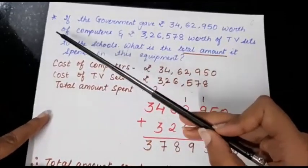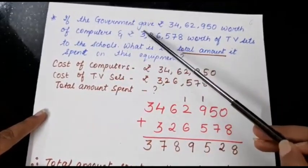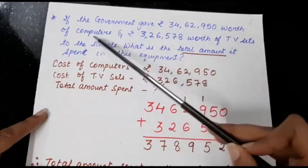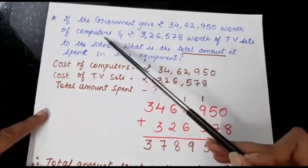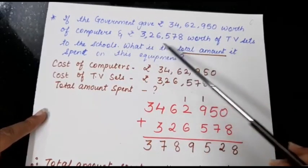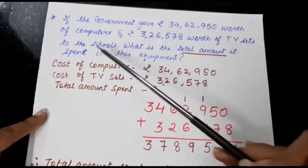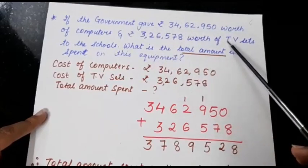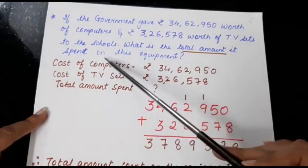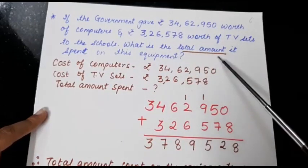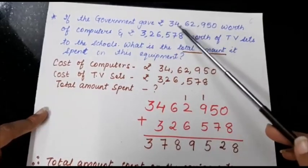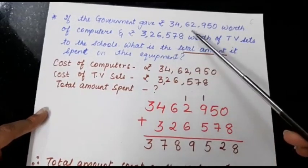Question is if the government gave rupees 34,62,950 worth of computers and 3,26,578 rupees ka they have given TV sets to a school. So in a school the government has given computers and TV sets. What is the total amount spent on this equipment? So what is the total amount that was spent on the computers and TV sets? So for that what we will do? We will add both the things to find out the total amount spent on the equipments.